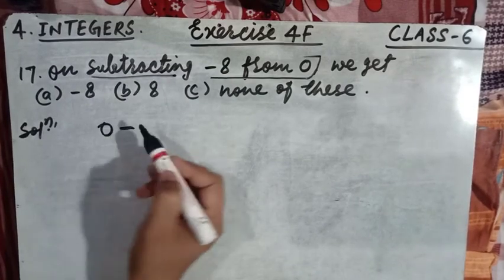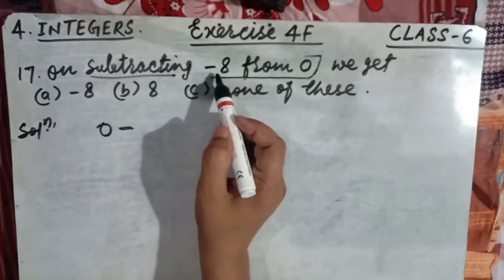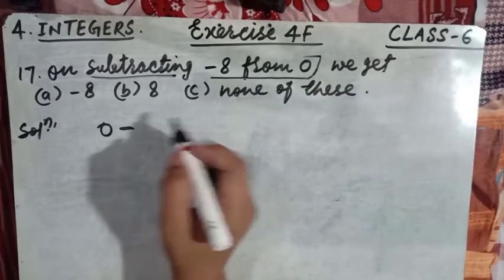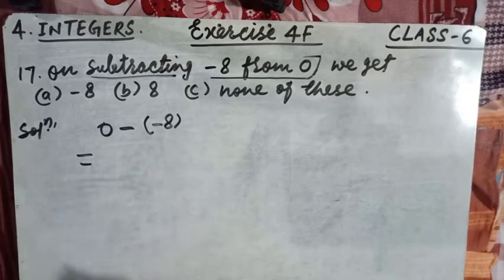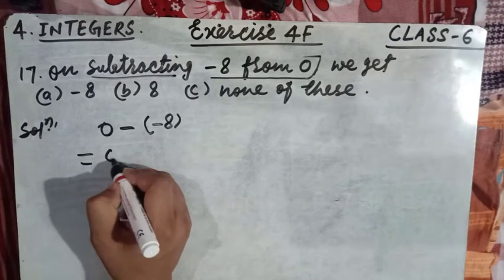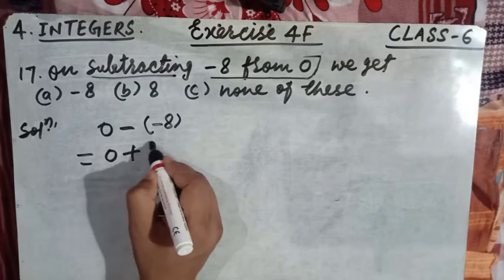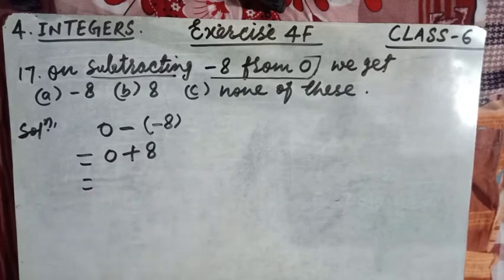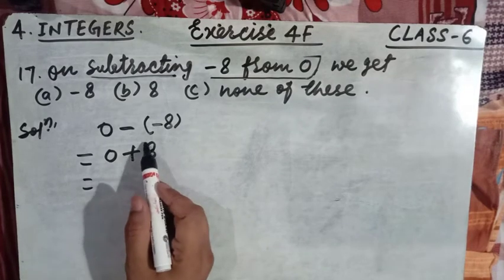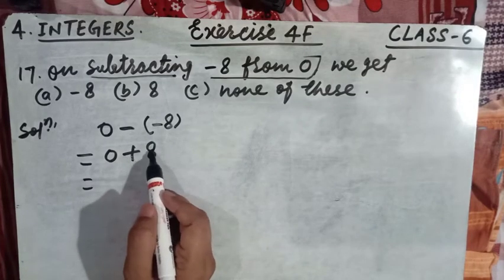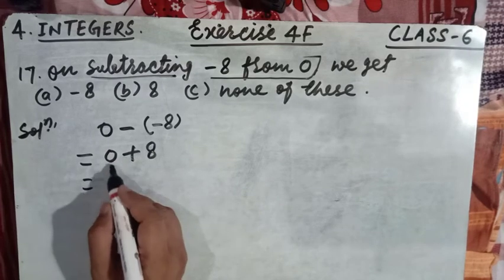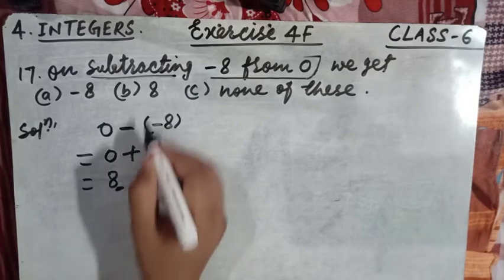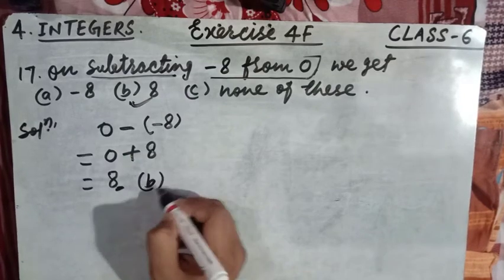So we have zero minus (minus 8). Now minus into minus gives plus, so this becomes zero plus eight. Zero added to any number gives the number itself, so zero plus eight equals eight. Match the option — eight corresponds to option B. Option B is the correct answer.